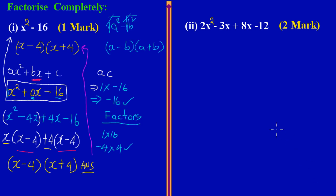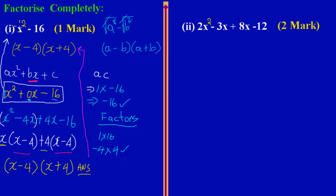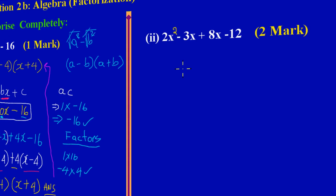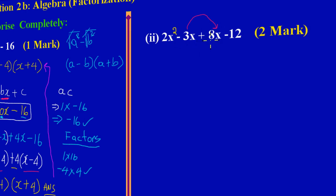Let me just split the screen a bit. We have another easy two marks to collect, so let's quickly get into it. We have another quadratic: 2x squared minus 3x plus 8x minus 12, and they're asking us to factorize this expression completely. In this quadratic they have given us the middle terms — we have negative 3x and plus 8x. Since they've given us the middle terms, we don't have to go through the whole process of finding factors — we can just quickly get into it.